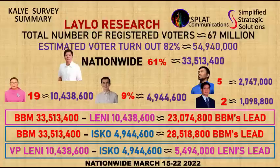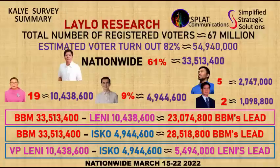Let us now compute the estimated vote lead from the first-ranked to the third-ranked presidential candidate using basic subtraction. Deducting VP Leni Robredo's estimated votes from former Senator Ferdinand Marcos Jr.'s yields approximately 23,074,800 votes in favor of Marcos Jr. Against third-ranked Manila Mayor Isko Domagoso, Marcos Jr. would lead by approximately 28,518,800 votes. The vote lead of second-ranked VP Robredo over third-ranked Mayor Isko yields an approximate 5,494,000 vote lead in favor of VP Robredo.